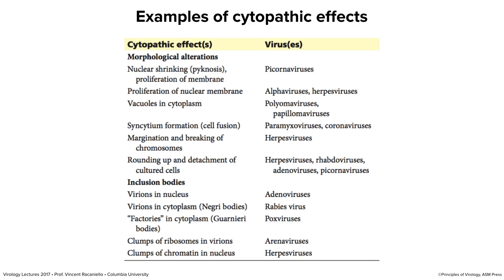There are lots of different kinds of cytopathic effects — you don't need to know them all. I just want you to know that viruses cause many different changes in cells: syncytium formation, nuclear shrinking, proliferation of membranes, vacuoles in the cytoplasm, breaking of chromosomes, rounding up and detachment of cells. Many viruses make inclusion bodies — they replicate in very specific areas in the cell that you can see in a microscope as time goes on, and they're characteristic for the virus. Virus particles in the nucleus or cytoplasm, when there are enough of them, can actually be seen in the light microscope.